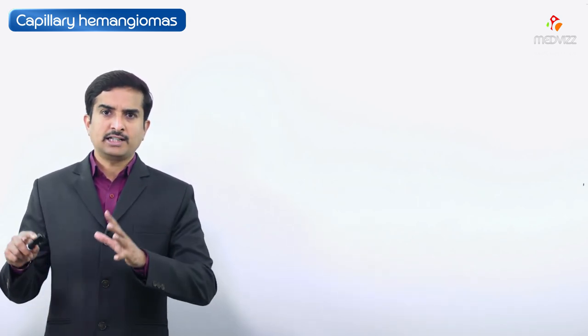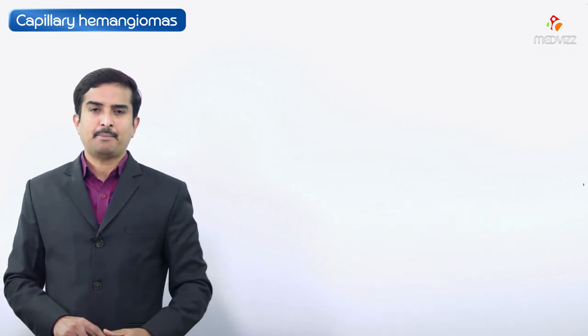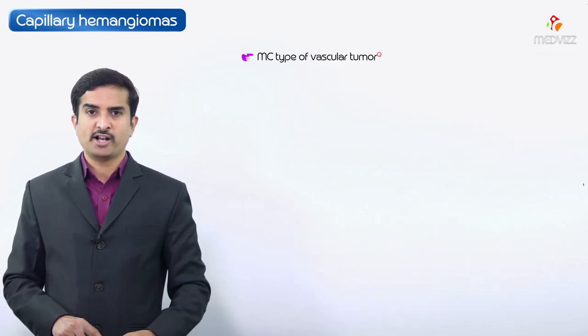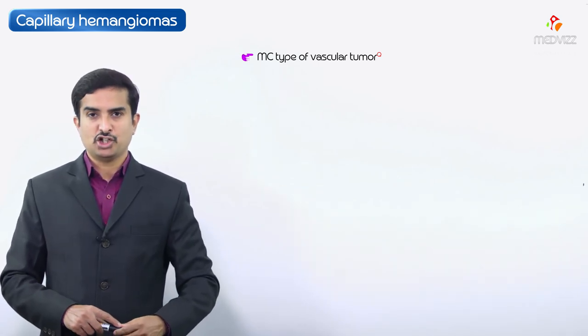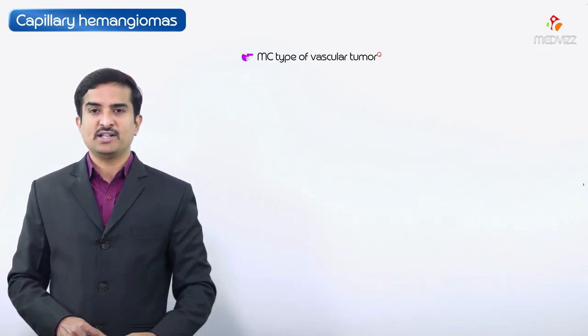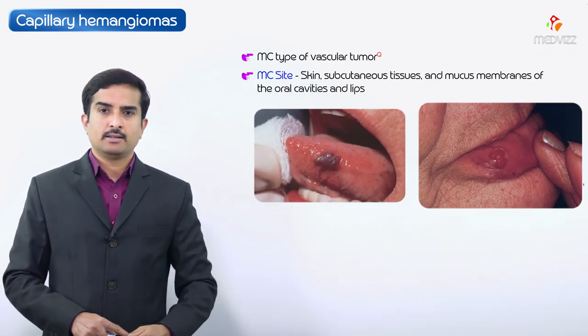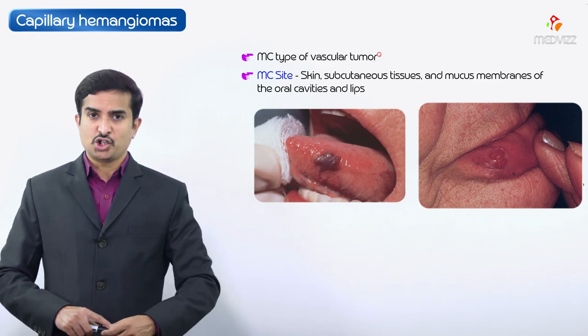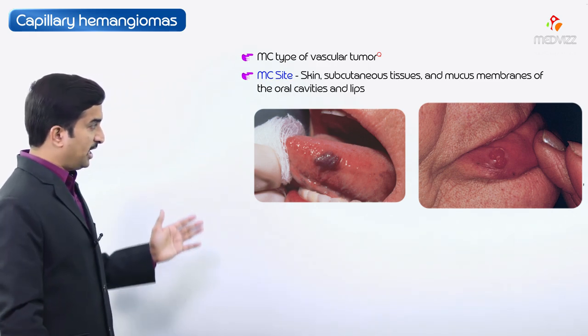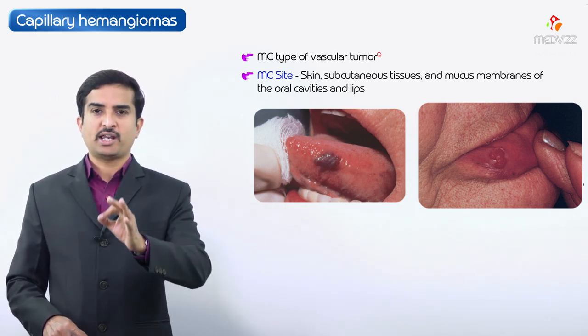Among the different types of hemangiomas, capillary hemangiomas are the most common type of vascular tumor — an important MCQ point. The most common locations are the skin, subcutaneous tissues, and the mucous membranes of the oral cavities and the lips.